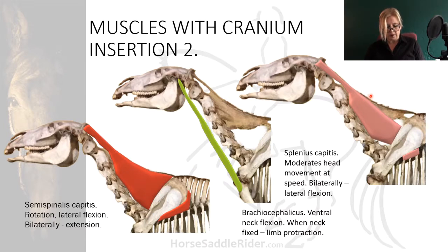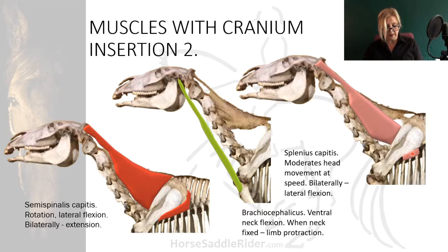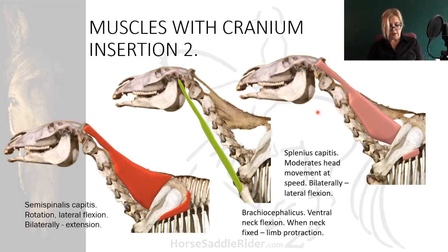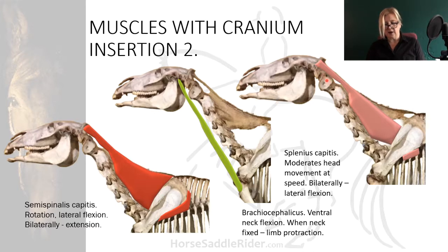Splenius is in two parts - this is the dorsal portion, splenius capitis. It originates on the nuchal funiculum fascia and thoracic vertebrae three, four and five, and inserts on the nuchal crest. It moderates head movement at speed with a buffering action, and when recruited on one side only, it produces lateral flexion. You will have noticed that the more extensive muscles with occipital insertions originate towards the trunk region, and this appears to leave the occipital atlanto-axial joint fairly free moving.